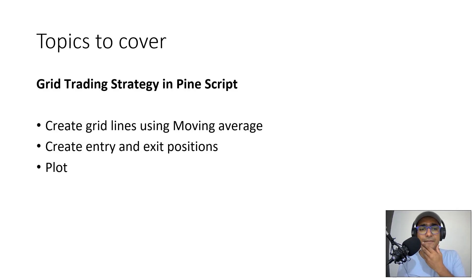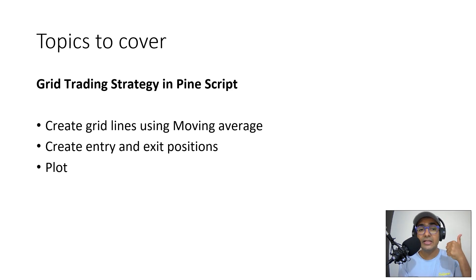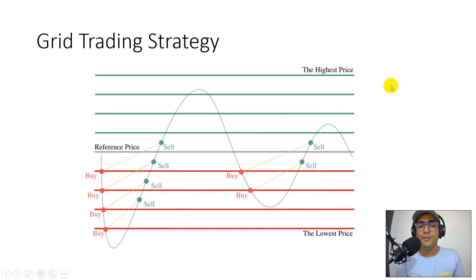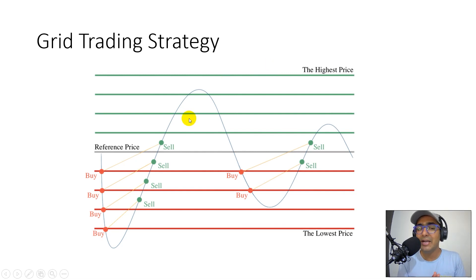These are the topics we are going to cover today. We are building the grid trading strategy on Pinescript. The three steps are: first, creating the grid lines using simple moving average; second, we'll create entry and exit positions; and third, we will plot everything for a better visual representation. For people who don't know what grid trading strategy is, basically we split our orders into multiple parts, such that we try to average out the entry or the exit price.